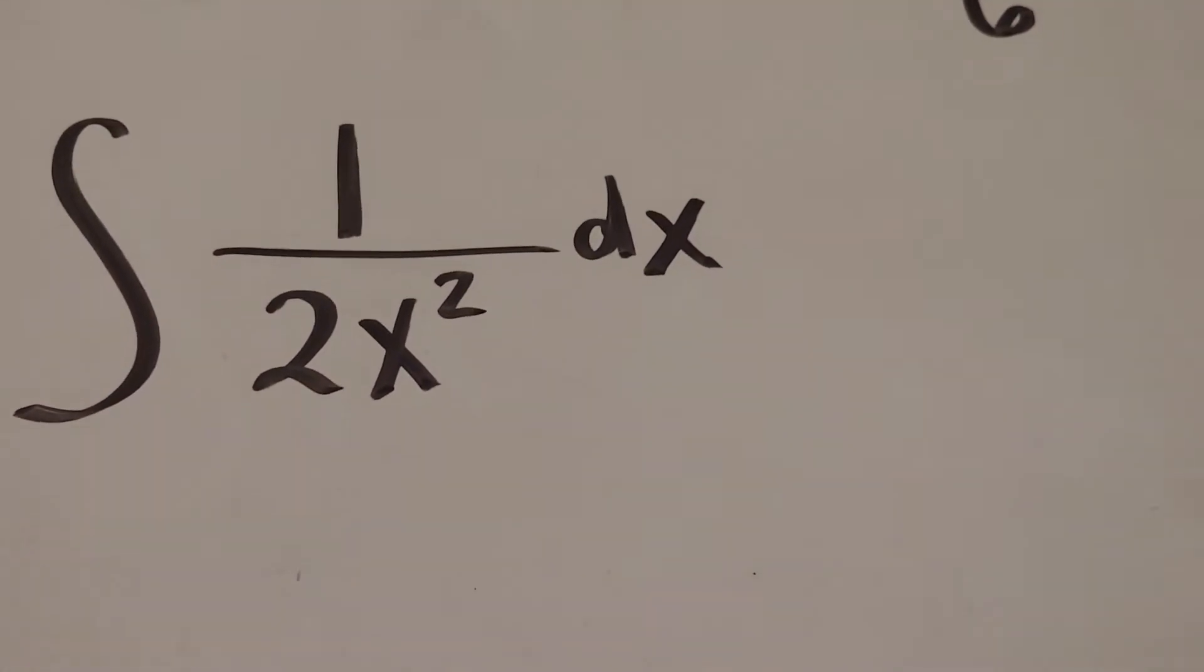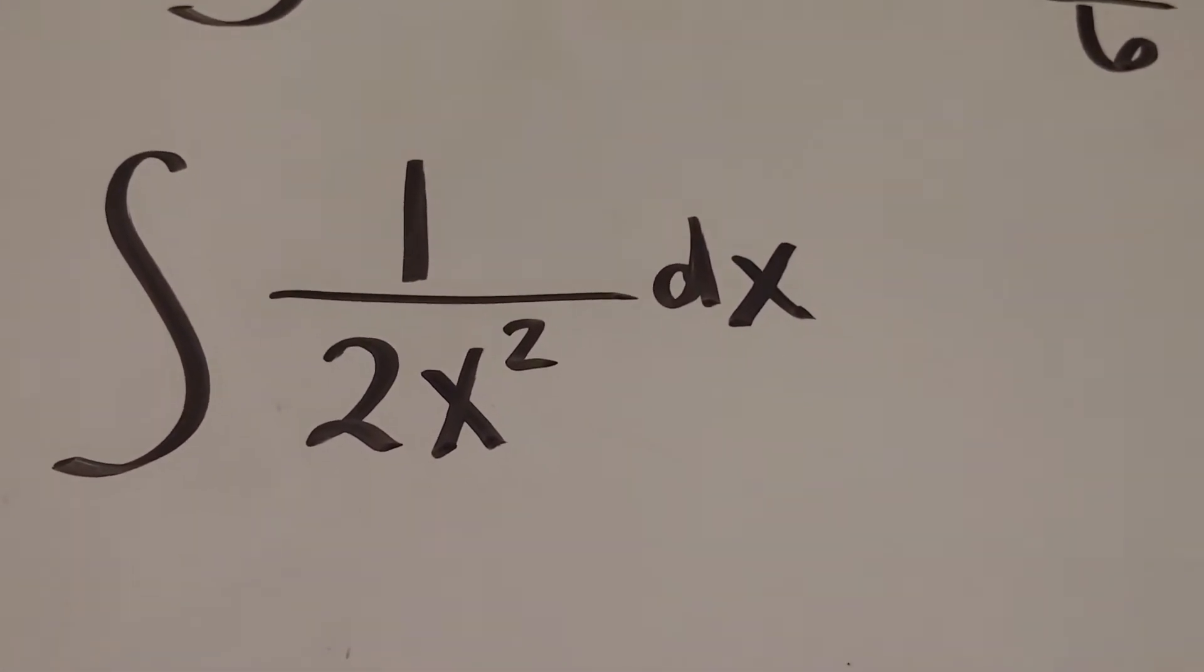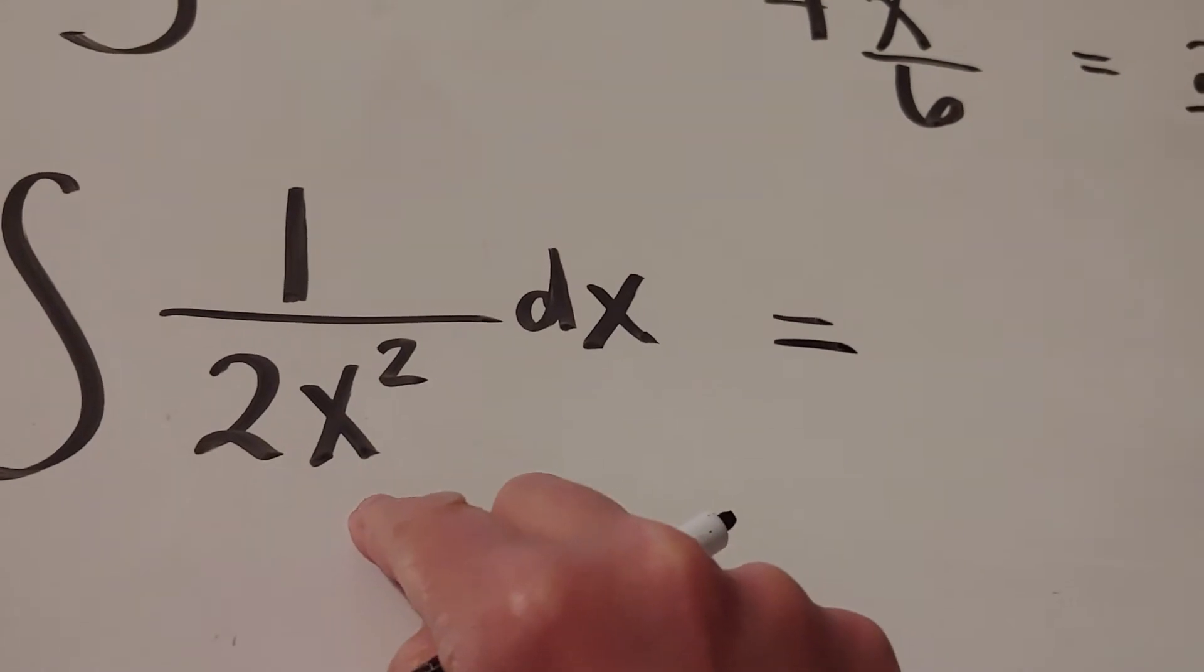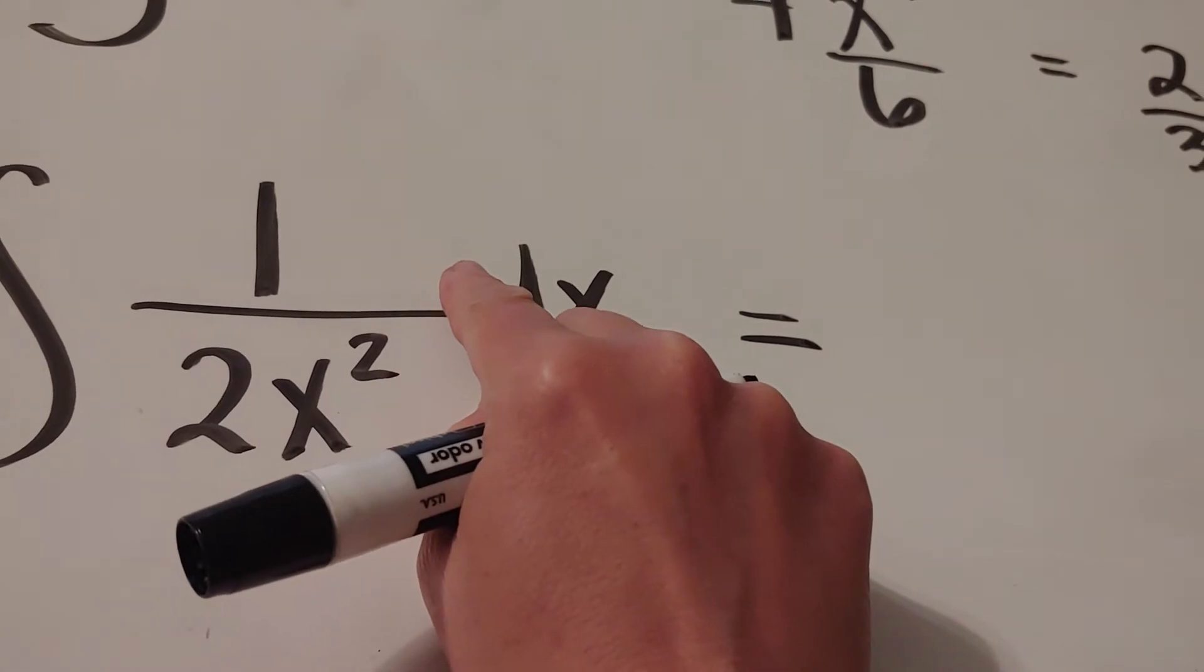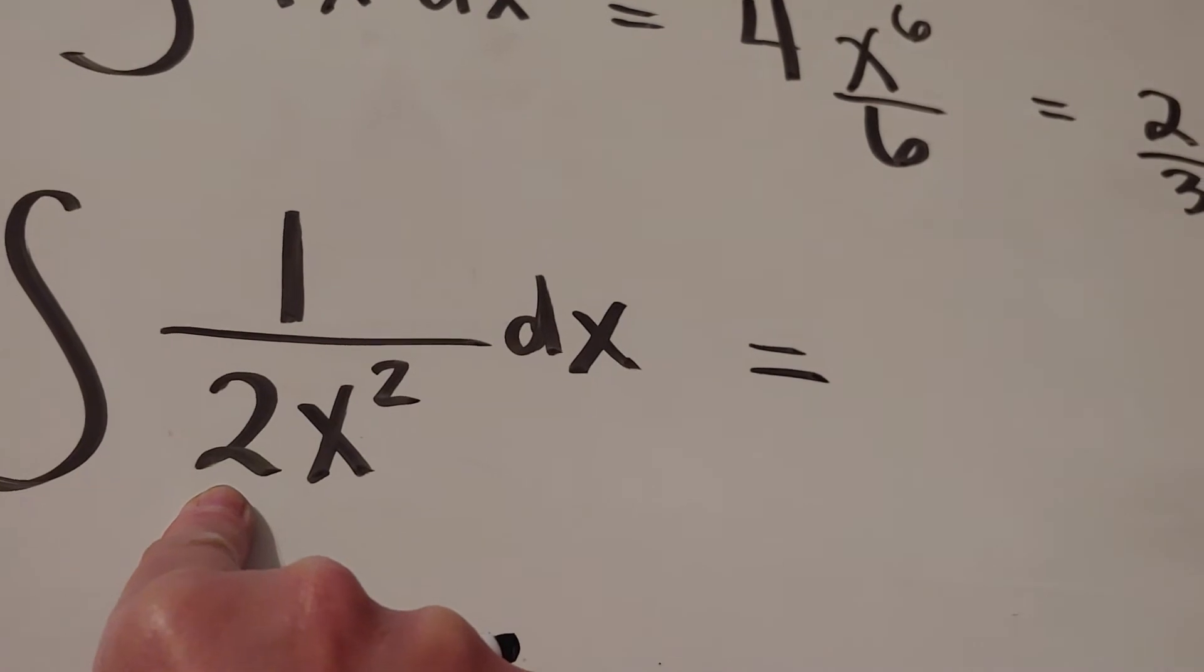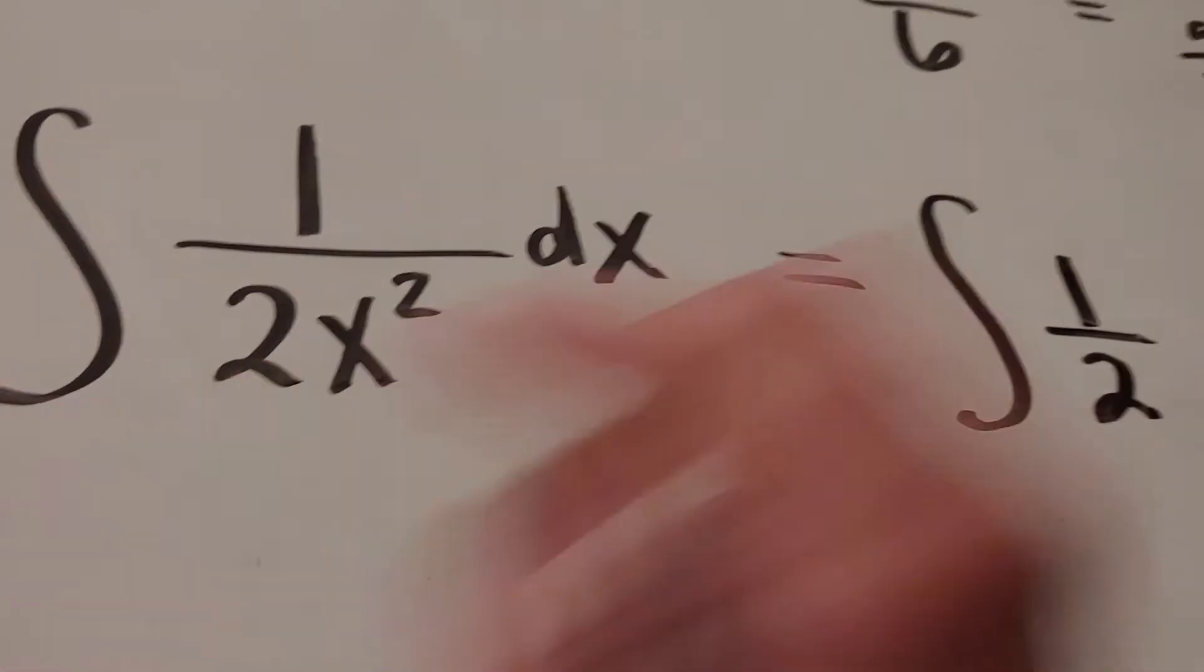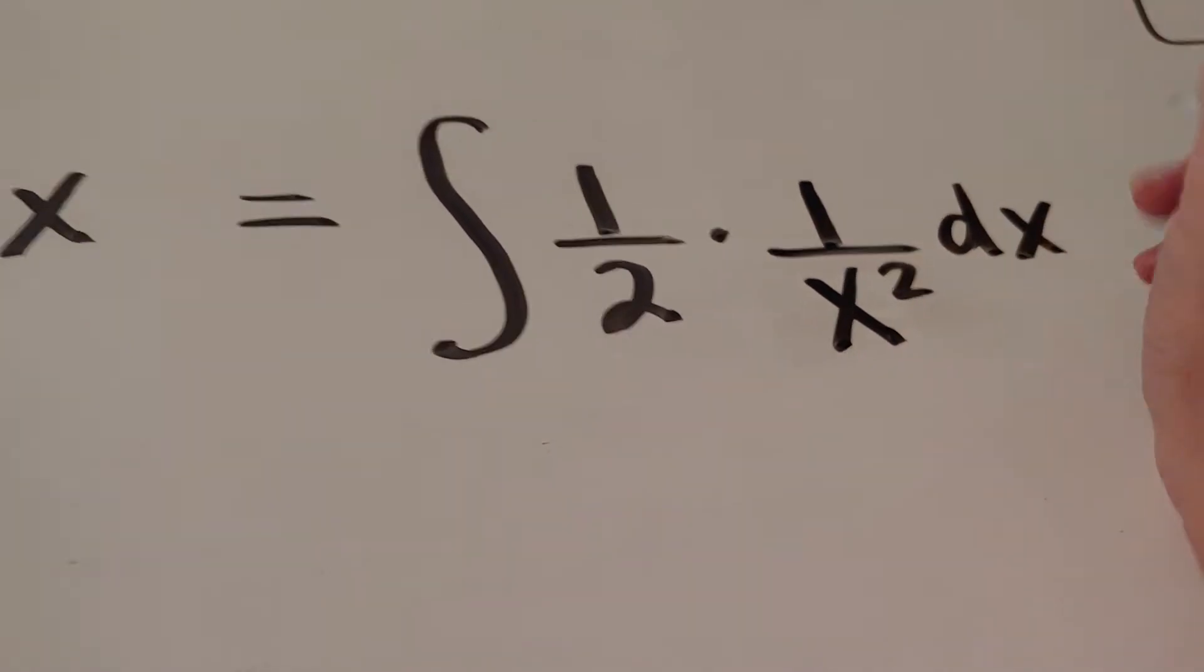Okay, all right, now this one's a pretty tricky one. This one's the integral of 1 over 2x squared. Okay, so what I want to do is, whenever I have an x in the denominator, I want to bring it up. That exponent of 2, when I bring it up, will be a negative exponent. But this 2 out front is actually acting like a coefficient. So what I'm going to do is, I'm going to do just an extra step real quick. And I'm going to bump that 2 and the 1 out front to be a 1 half, and then leave my 1 over x squared.